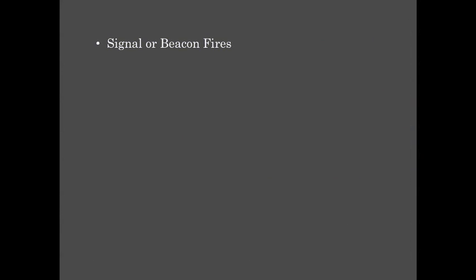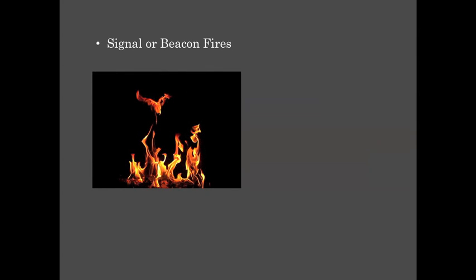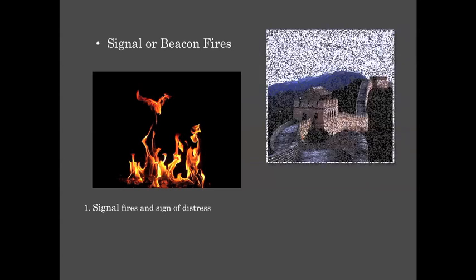The history of instant communication at a distance from ancient times begins with beacon or signal fires. This involved an agreed code of what these signals meant. Still used today, the international signal for distress is three fires in a triangular formation. Another example of where this type of communication was used is on the Great Wall of China. It most likely did not take long for messengers to tire of running back and forth between these towers.